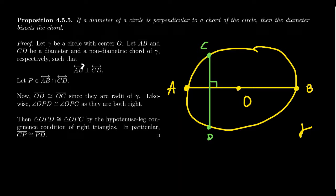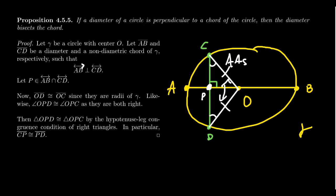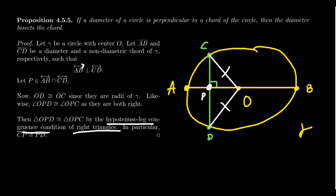Line AB is perpendicular to line CD by assumption, so the lines necessarily intersect. Call that point of intersection P. Consider triangle COD again: segments CO and OD are both radii of gamma and thus congruent. We have an isosceles triangle, so angle PCO is congruent to angle PDO. Combined with the right angles at P, we have an angle-angle-side situation. There is also the hypotenuse-leg congruence condition to consider.